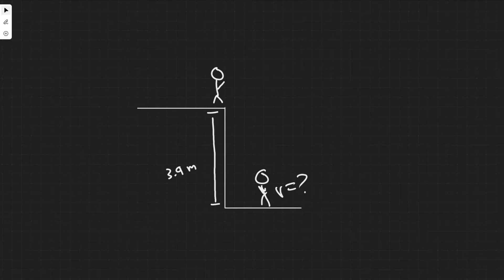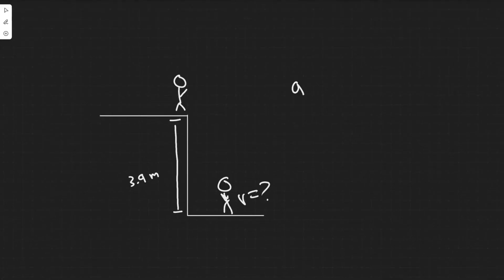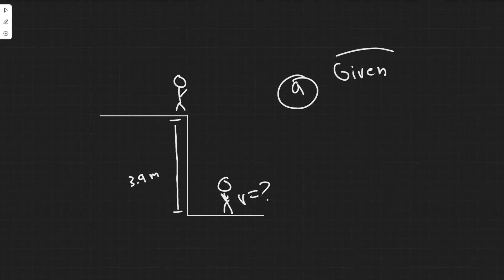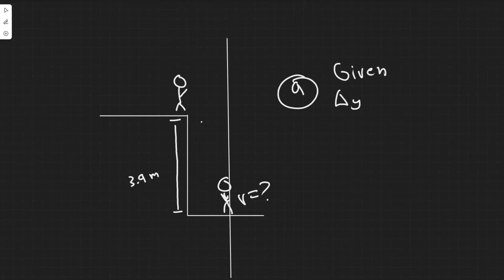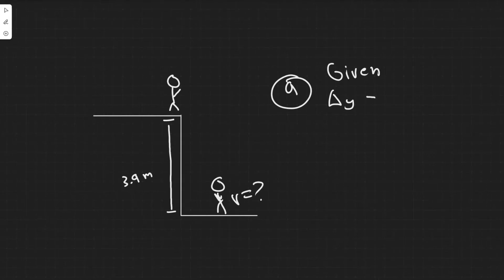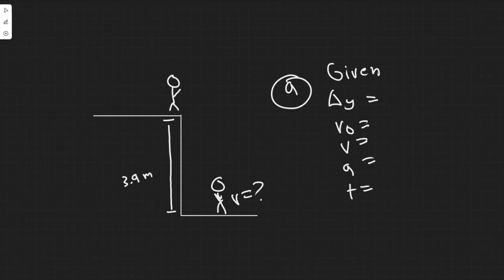The way we're going to solve Part A is by using kinematics. The first thing I always like to do with kinematics is write out my given values and all the kinematic variables we'll be using. The variables are going to be delta y — we're using y because we're working along the y direction — and then v sub zero, v, a, and t: initial velocity, final velocity, acceleration, and time.